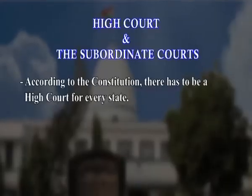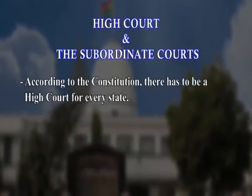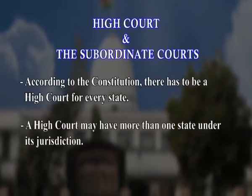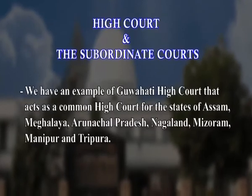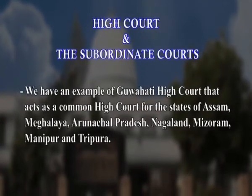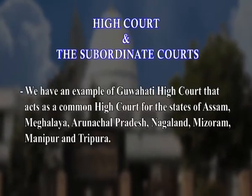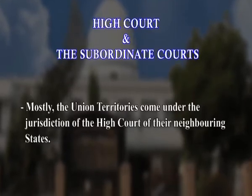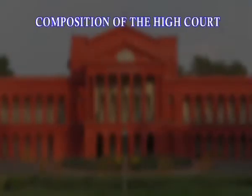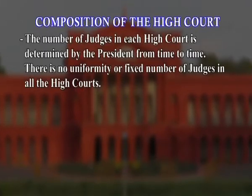Now we will move to the high court and the subordinate courts. According to the constitution, there has to be a high court for every state. A high court may have more than one state under its jurisdiction; for example, the Gauhati High Court acts as a common high court for the states of Assam, Meghalaya, Arunachal Pradesh, Nagaland, Mizoram, Manipur, and Tripura. Mostly, union territories come under the jurisdiction of the high court of their neighboring states. Each high court has a chief justice and judges; the number of judges in each high court is determined by the president from time to time. There is no uniformity or fixed number of judges in all high courts.